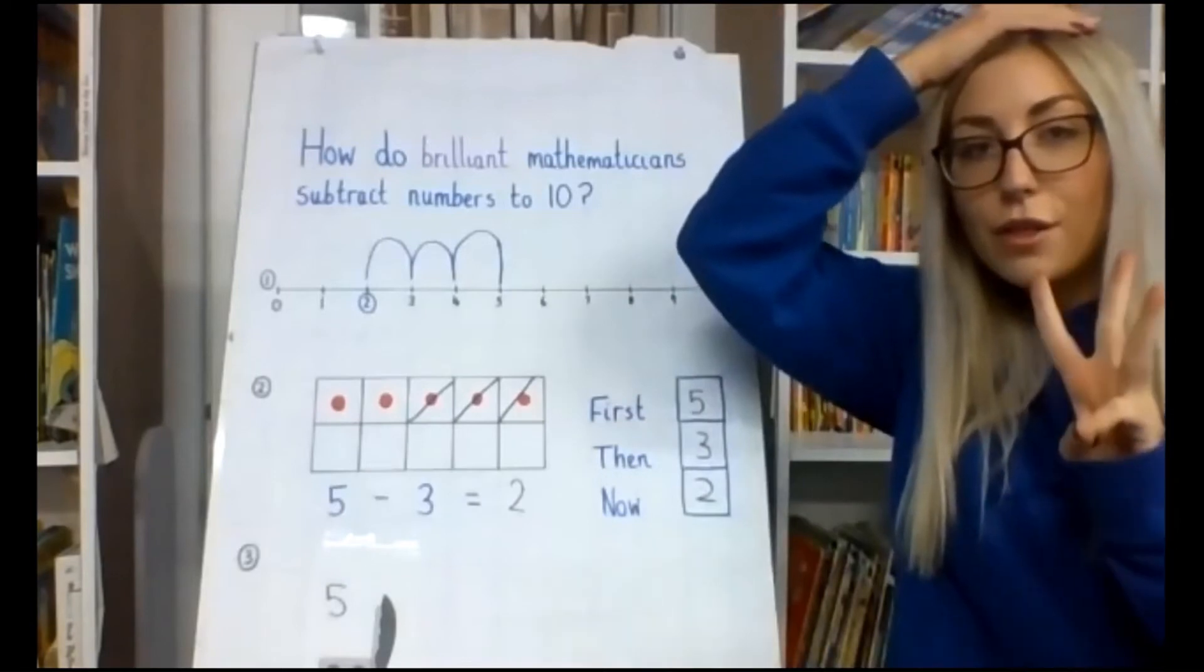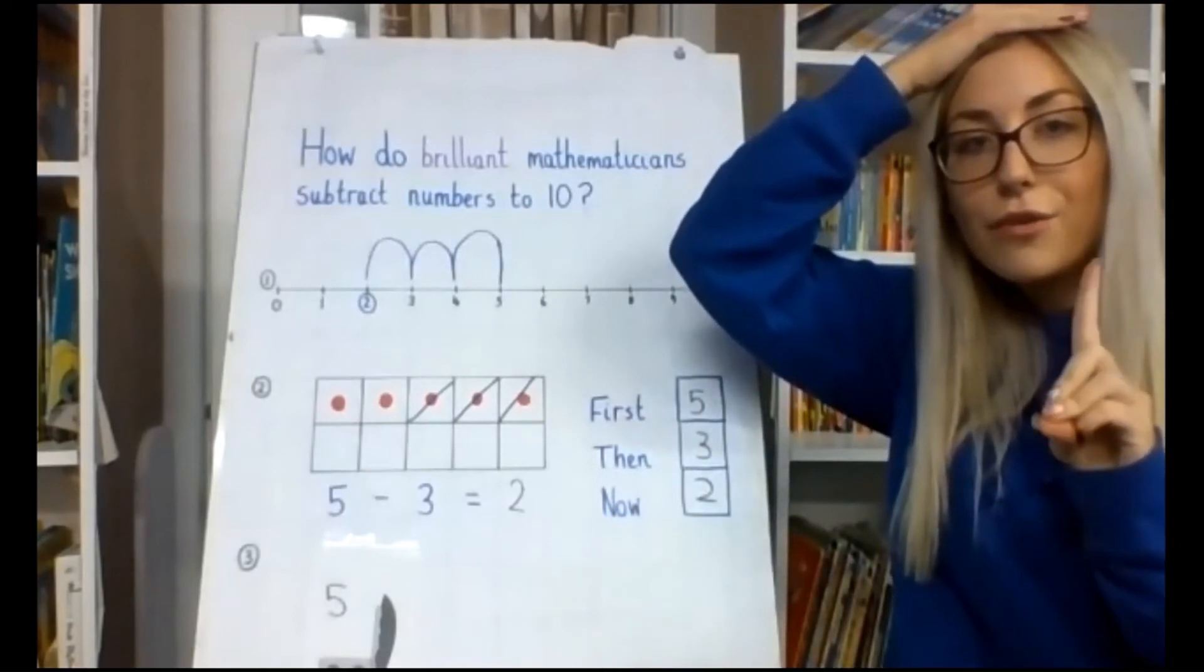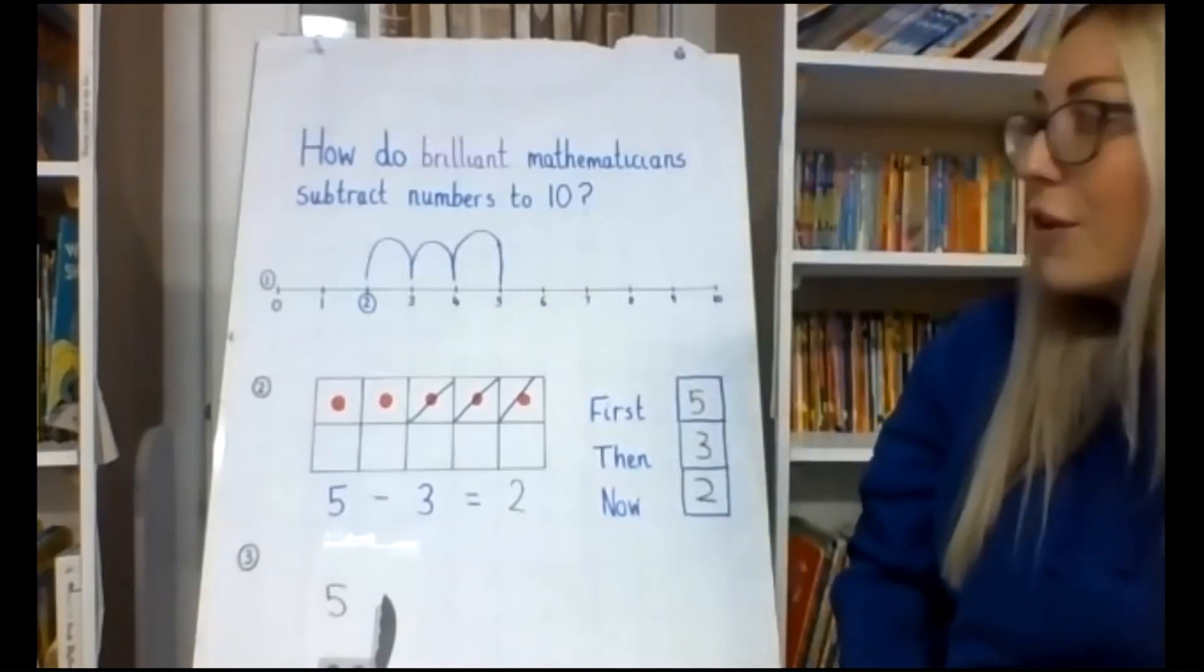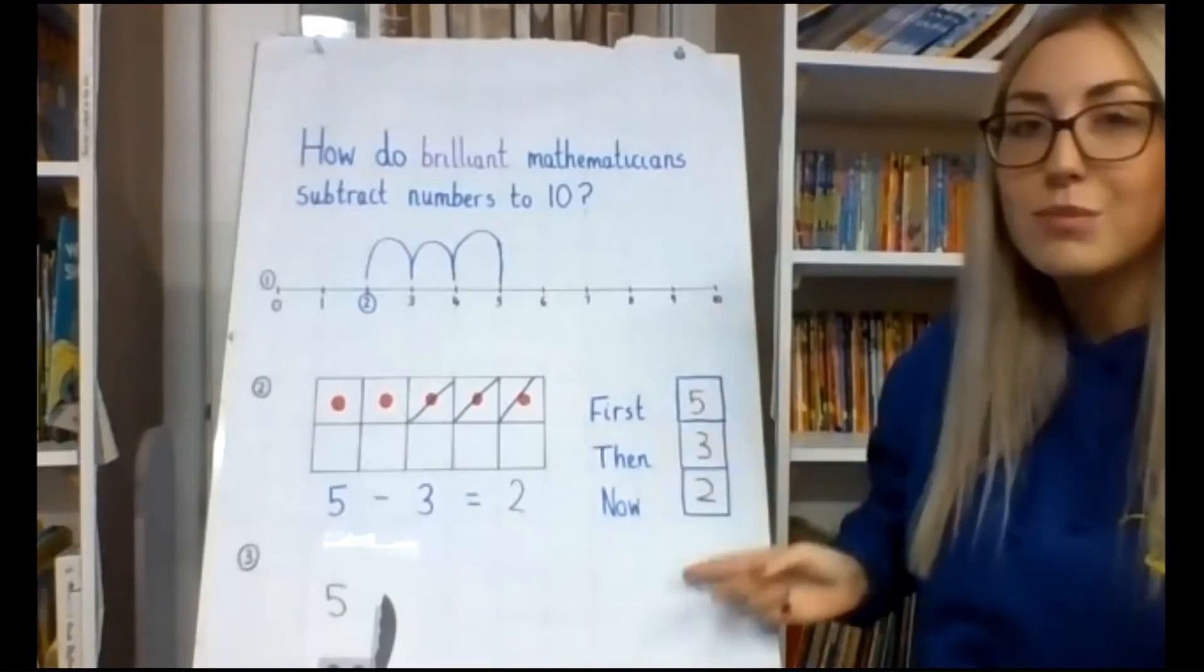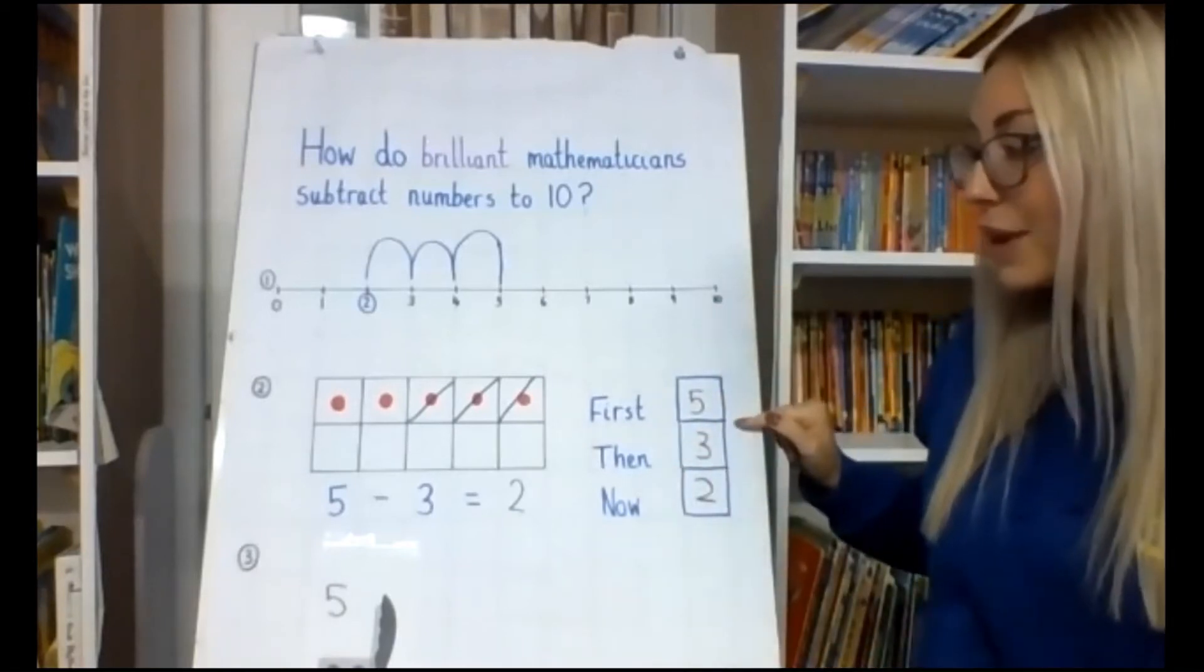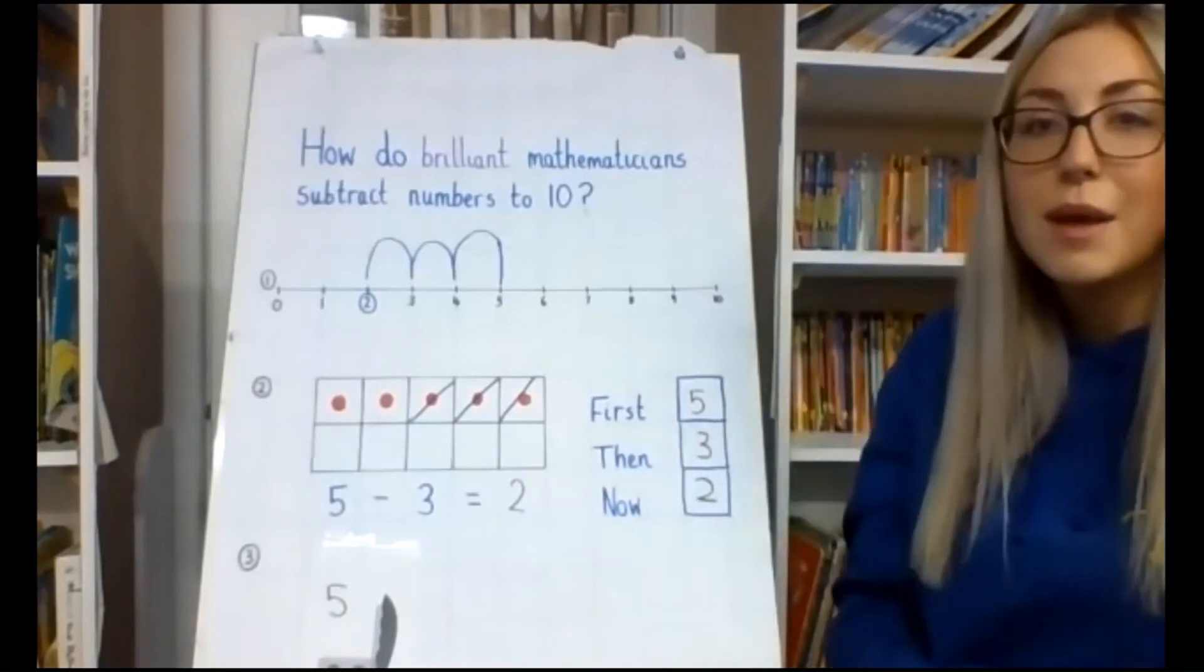So 5, 3 on my fingers. 5, 4, 3, 2. Okay. So the children can use any of these methods, 1, 2 or 3, so the number line method, the 10 train method, or using their fingers and their heads for their mental math method.